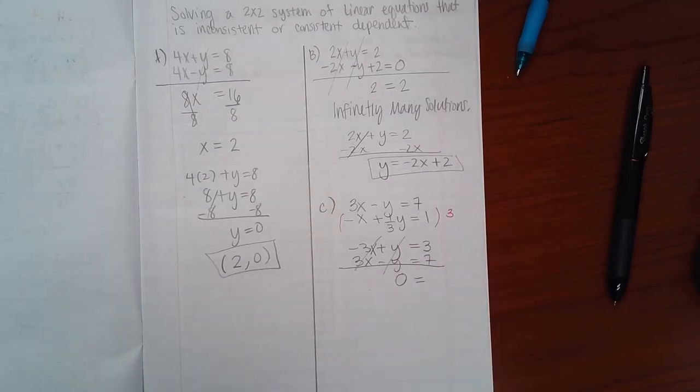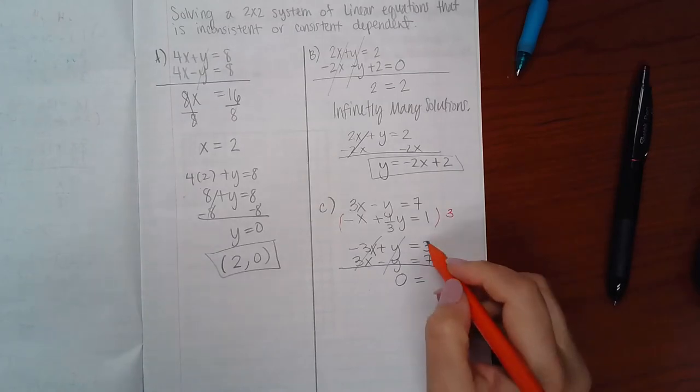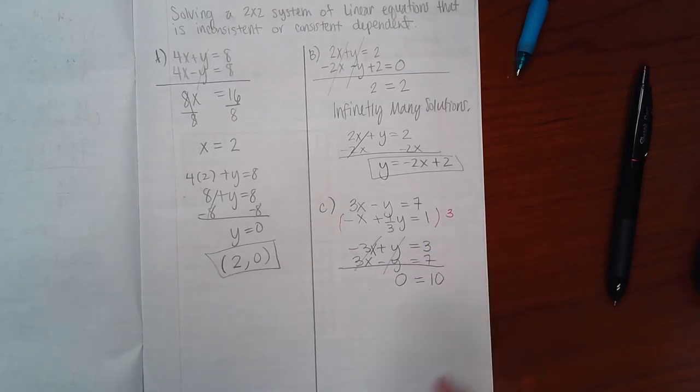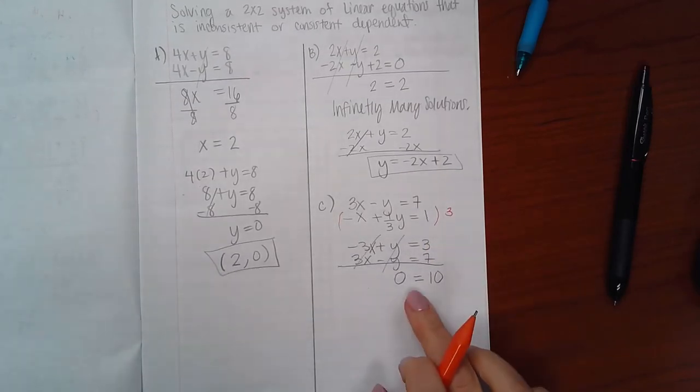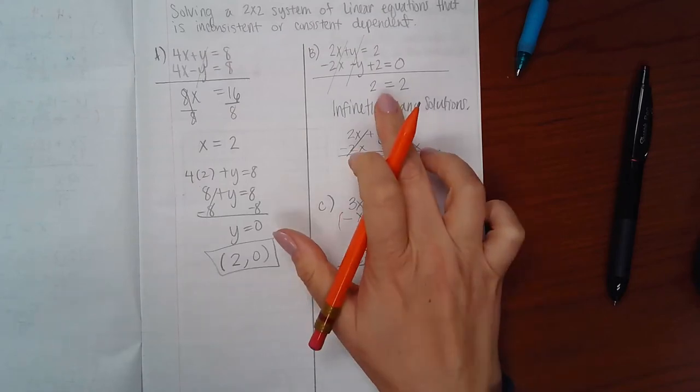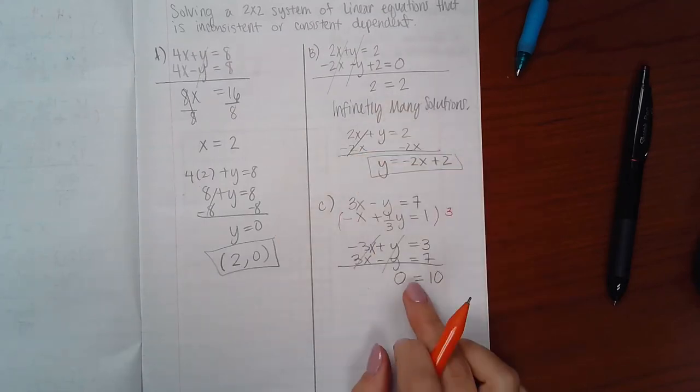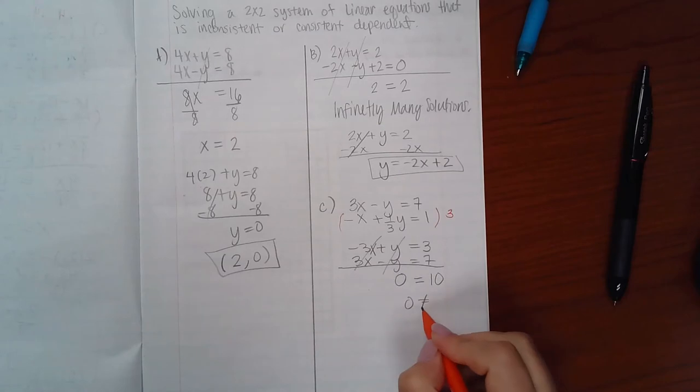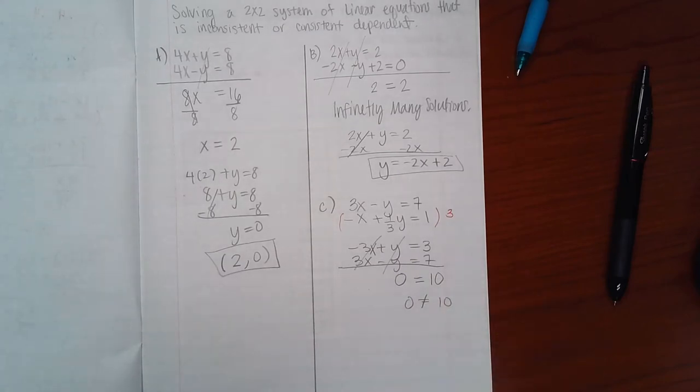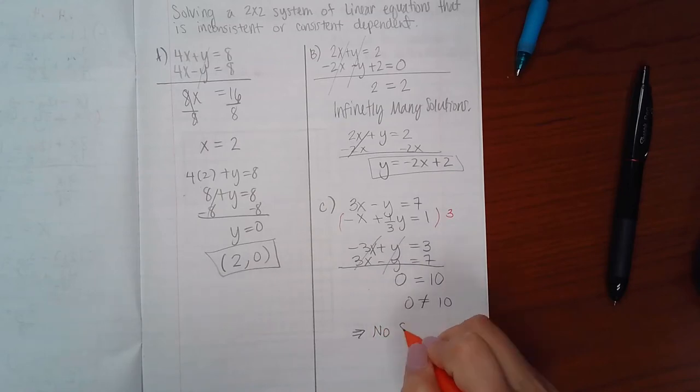Unfortunately though, the left side eliminates the x's and the y's are eliminated, which means there's nothing left on the left hand side. And on the right hand side, if I combine those, I end up with 10. Now this is not a true statement like that one. This is a false statement - zero does not equal 10, ever. Okay, that means that there is no solution.